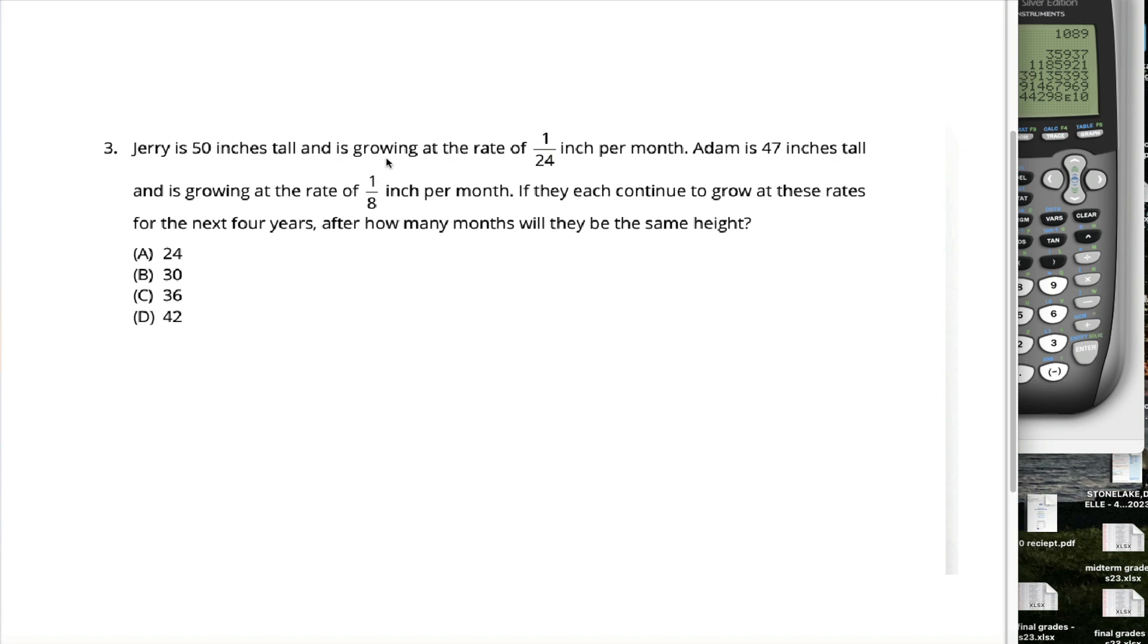First comment, the rates at which they're growing are fractions with different denominators. Make your life easy and get a common denominator. Instead of thinking about Adam growing at a rate of 1/8th inch per month, think about Adam growing at 3/24ths inches per month. So one dude is growing 1/24th of an inch, the other one's growing 3/24ths of an inch. Adam is growing 3/24ths minus 1/24th, in other words 2/24ths, in other words 1/12th of an inch faster per month. Note that Adam is currently 3 inches shorter than Jerry. He's making up a 12th of an inch each month. He needs to make up 3 inches. How long is it going to take him?